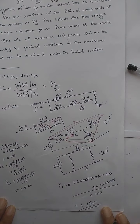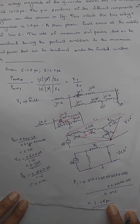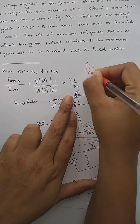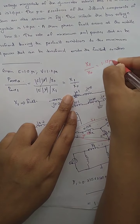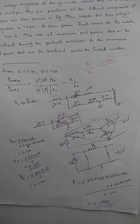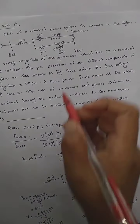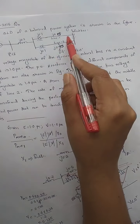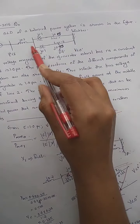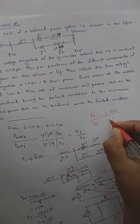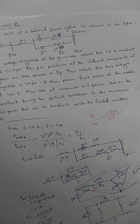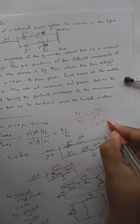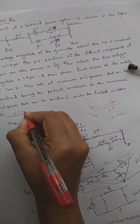The X1 value is 1.15 per unit. Now finding X0 under the steady state pre-fault condition: 0.5 plus 0.1 equals 0.6 for each line path, and 0.6 in parallel with 0.6 gives 0.3. Adding 0.2 gives X0 = 0.5 per unit. Therefore, the ratio X1/X0 = 1.15 / 0.5 = 2.3 per unit.